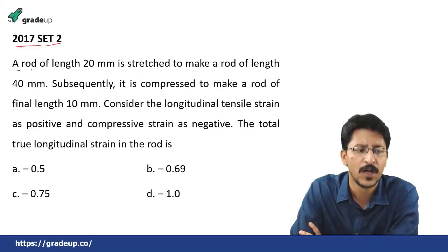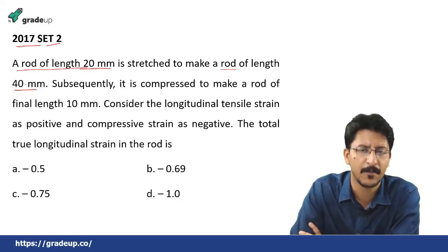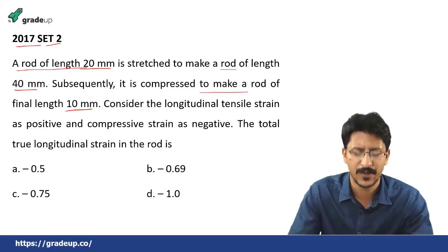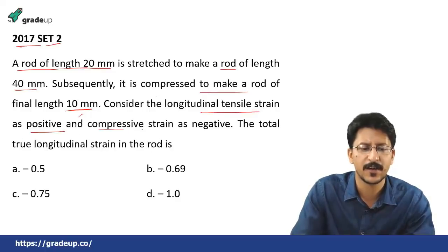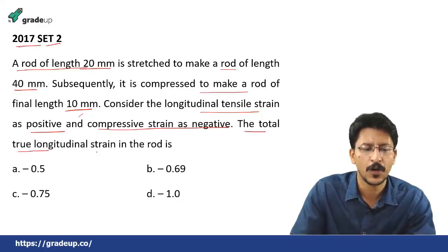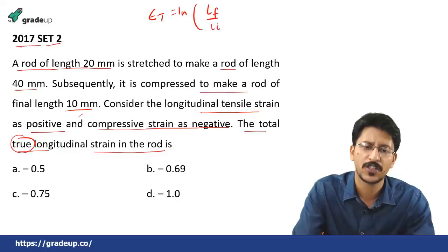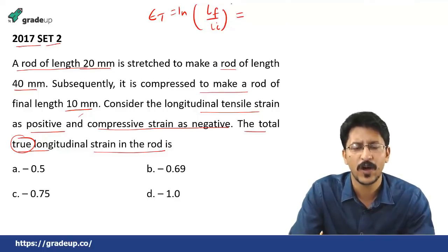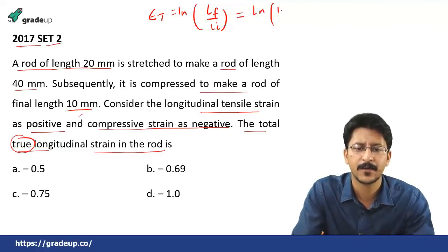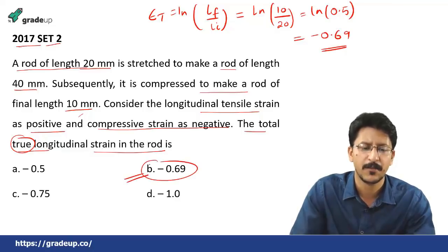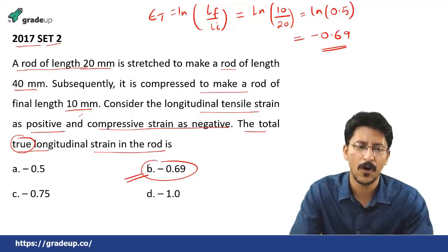GATE 2017, Set 2 (last question): A rod of length 20 mm is stressed to a length of 40 mm and then compressed to a final length of 10 mm. The total true longitudinal strain is asked. True strain equals ln of (final length divided by initial length), regardless of intermediate length. So it is ln of (10/20) equals ln of 0.5, which gives minus 0.69. The correct option is option B: minus 0.69.